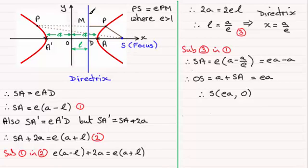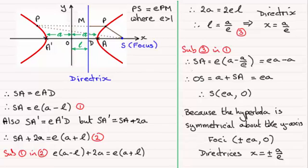Now because the hyperbola is symmetrical about the y-axis, I didn't have to take the focus or the directrix on the right-hand side of the y-axis. I could have done exactly the same calculation if I'd taken them on the left-hand side. It would have led to the focus S having coordinates minus EA and the directrix would have been x equals minus A over E. So what we have then is that because the hyperbola is symmetrical about the y-axis, the foci can either be at plus or minus EA, zero, and the directrices can either be at x equals plus or minus A over E.